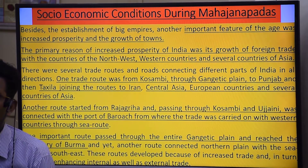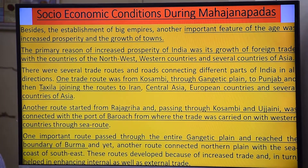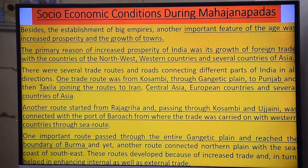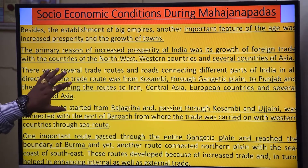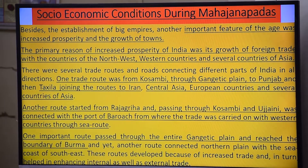India became a source of wealth and therefore people started attacking it. There were several trade routes, and you need to understand how goods traveled westward, then to the Arabian Sea, and then to the east side.